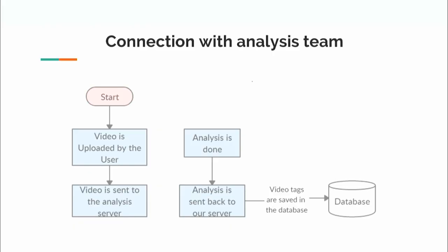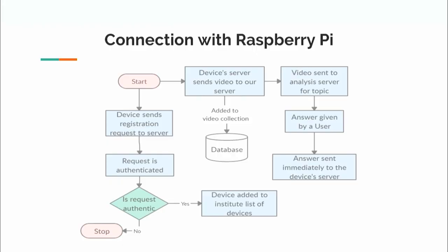Our system is connected with an analysis team and a Raspberry Pi team. As soon as the user uploads a video, it is sent to the analysis team, which provides text, topics, gender, and emotions extracted from the video. These are used to send the video to appropriate users for answers. After processing, the analysis team sends back the topics and tags, which we use to update our video database so the video can be routed to the right users.